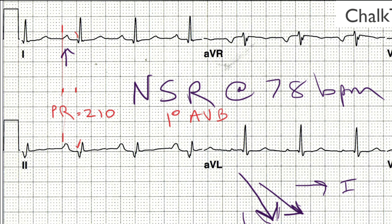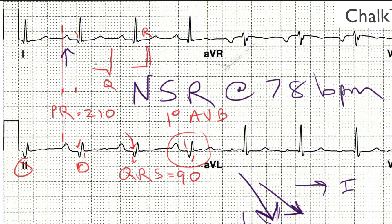Now, what about the width of the QRS complex? You can take advantage of the fact that this QRS complex ends on a heavy line and measure back to see that it's just above two small boxes — about 90 milliseconds wide, so that's normal. But while looking carefully at the QRS complexes, in lead two the initial deflection seems to go down. If the first part of the QRS goes down, we refer to that as a Q wave — and this definitely looks like a Q wave. It's more than one box wide, so that's abnormal.